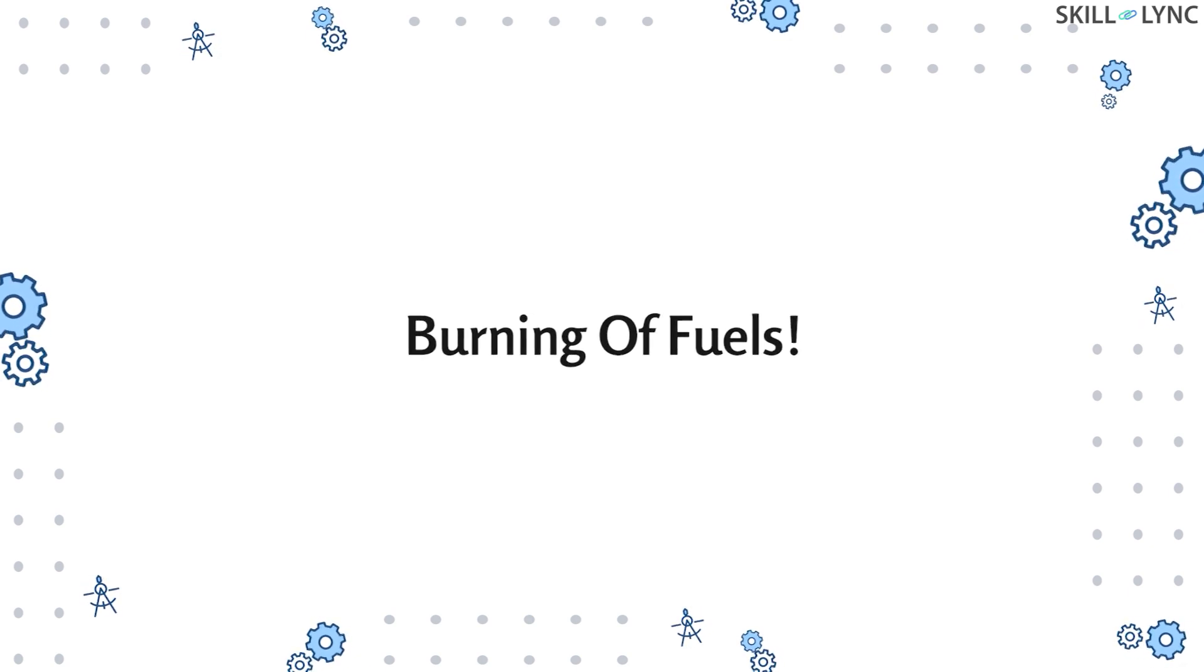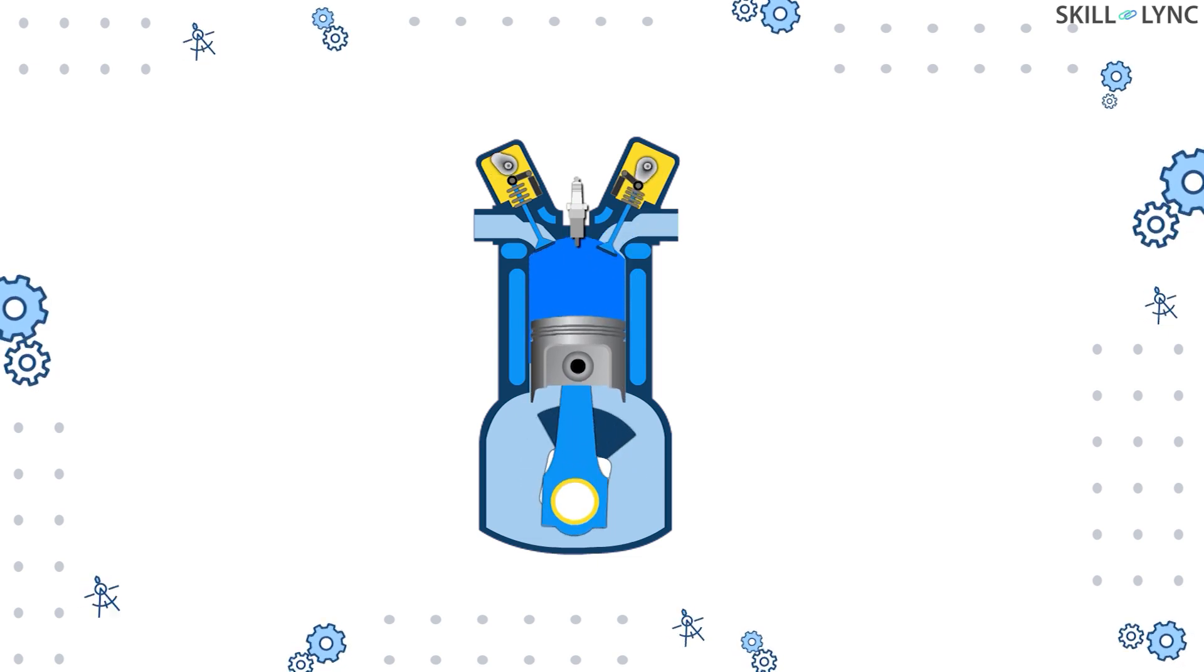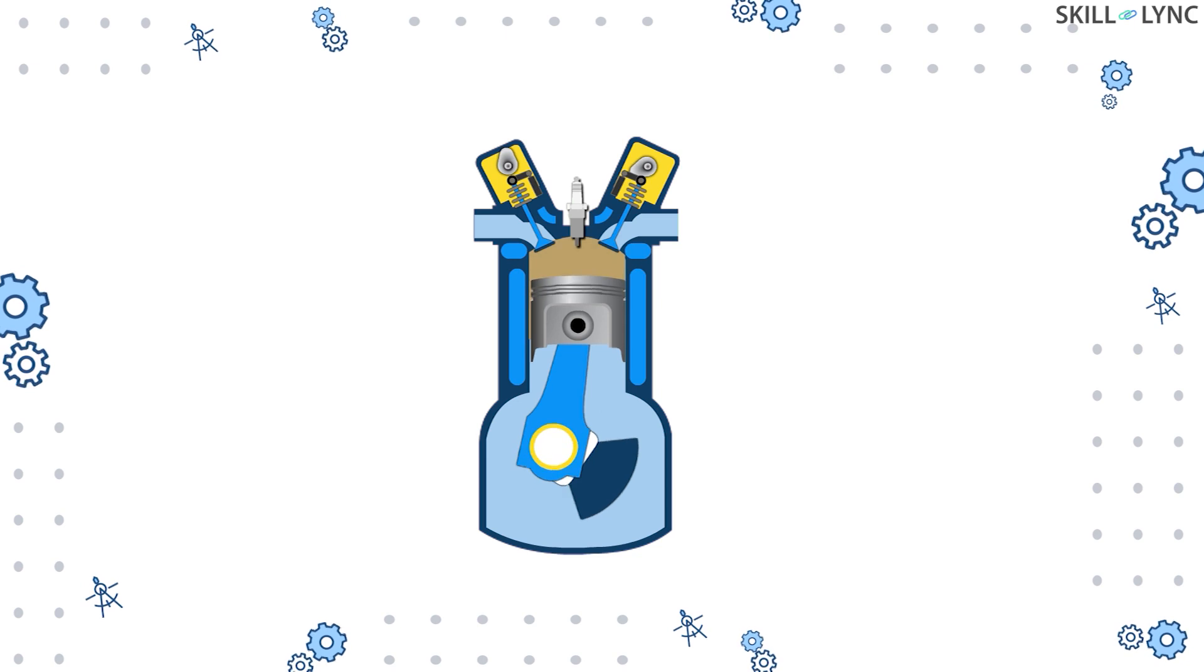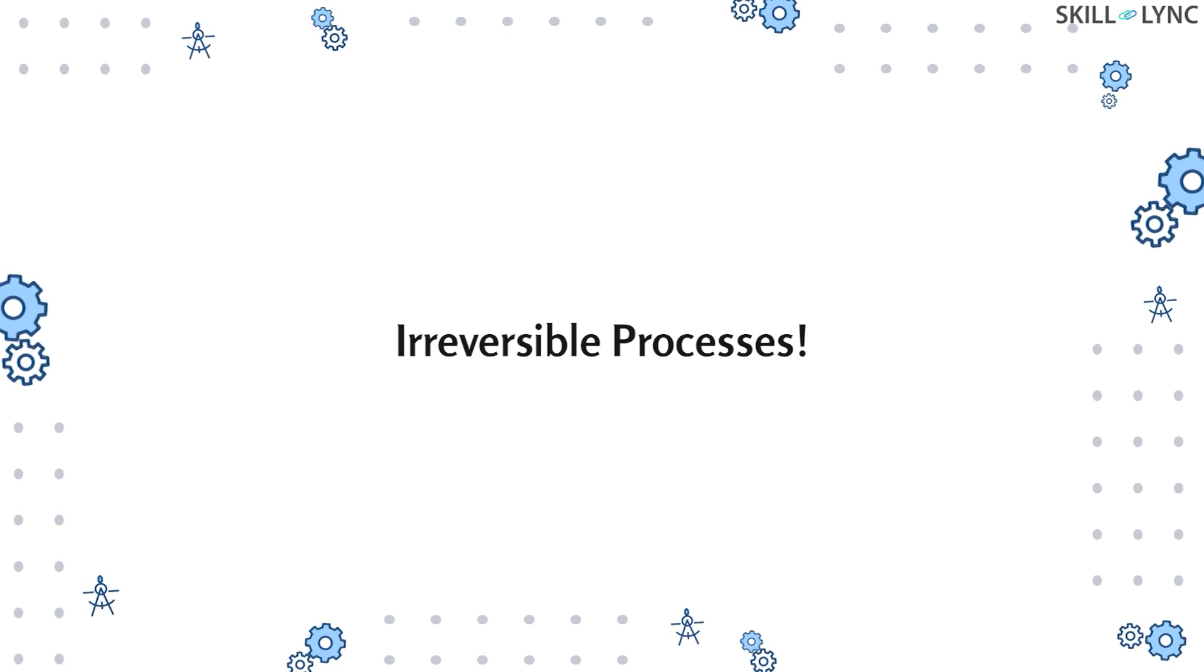When we operate a vehicle using fuel, the combustion process takes place which consumes the fuel and helps in operating the vehicle. This combusted fuel cannot be retrieved and brought back to its original state and hence it can be considered as an irreversible process. They are called irreversible processes because energy is lost in some way or the other that makes the process not completely reversible.